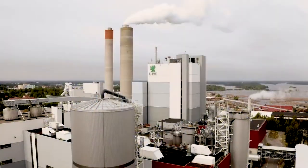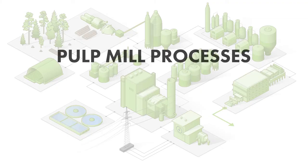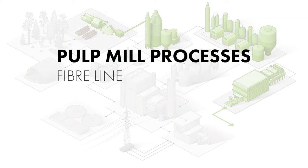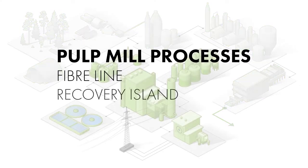This is a pulp mill. The main production processes at any pulp mill are the fiber line, where fibers are extracted from wood, the recovery island line for chemical recovery and energy retrieval, and the effluent treatment line.